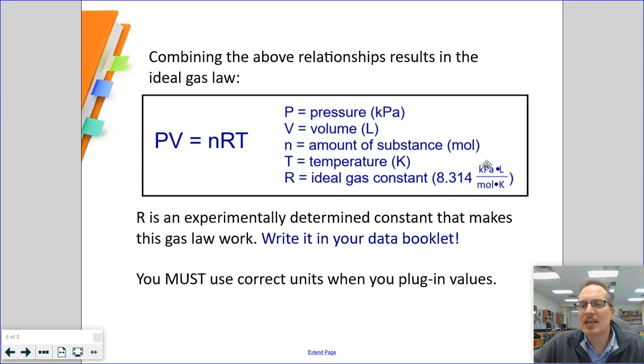This unit is critical. This unit tells me what all these variables must be measured in. Pressure must be in kilopascals, volume must be in liters, temperature must be in kelvins, and chemical amount must be in moles. These must be plugged in in these four units exactly. Please make sure this constant is placed in your data booklet.